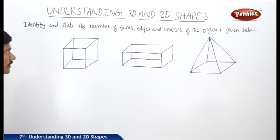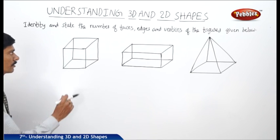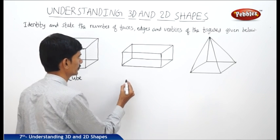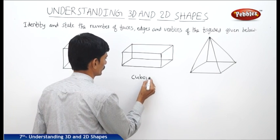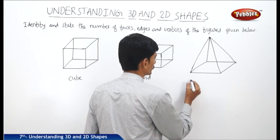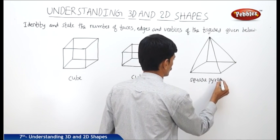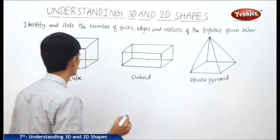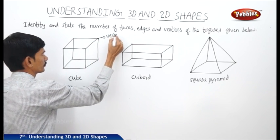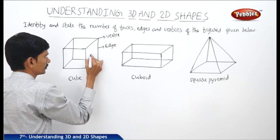Now let us see the next question: identify and state the number of faces, edges, and vertices of the figures given below. The first figure is a cube and the third figure is a square pyramid. This corner is a vertex, this line is an edge, and this flat surface is a face.